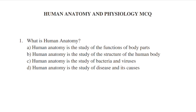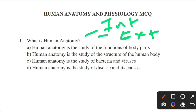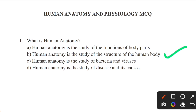Human Anatomy and Physiology MCQ. First question: what is human anatomy? Options include: study of function of body parts, study of structure of human body, study of bacteria and virus, and study of disease and its cause. Human anatomy is the study of internal and external structures of the human body. Answer: option B — study of structure of the human body.